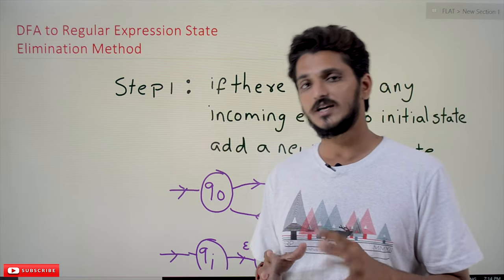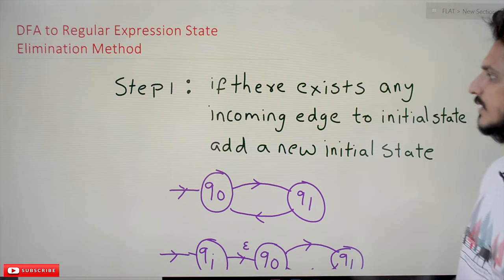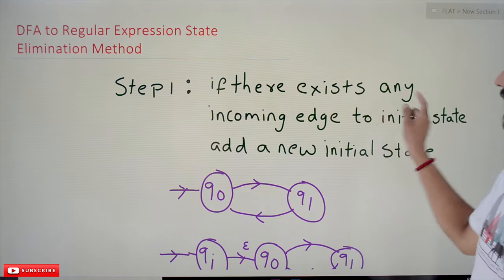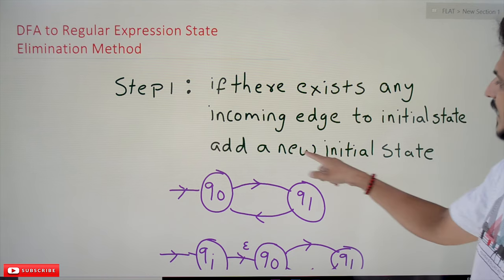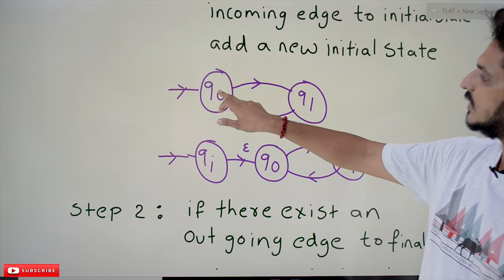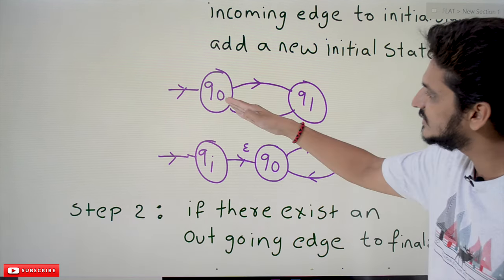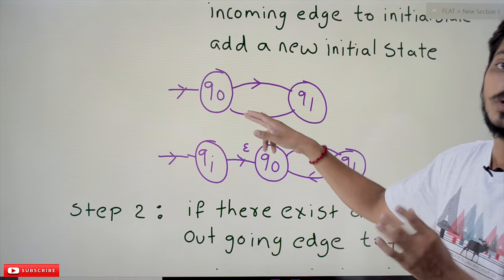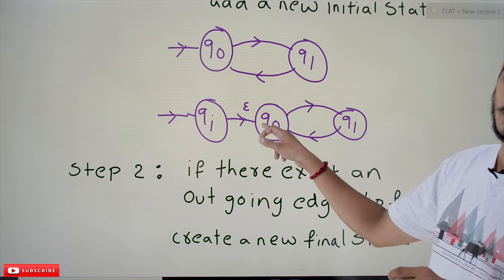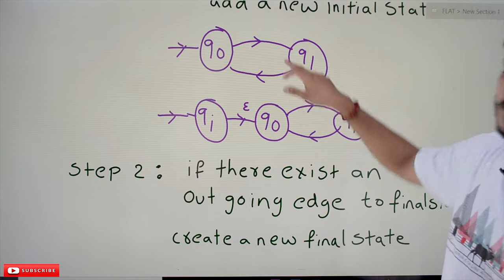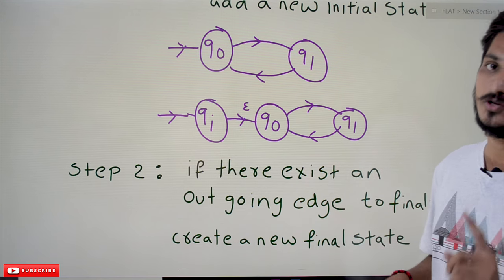Coming to today's class, let's take an example and understand the process. Before going into the example, the state elimination method follows some steps. The first step is: if there exists any incoming edge to the initial state, add a new initial state. For example, if Q0 is the initial state and has an incoming edge, we add a new initial state QI, and from QI we move to Q0 using epsilon moves. The remaining DFA stays the same — we are not changing the logic.